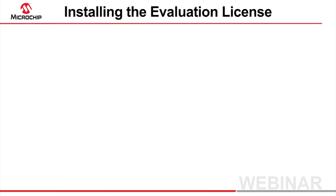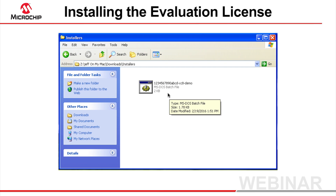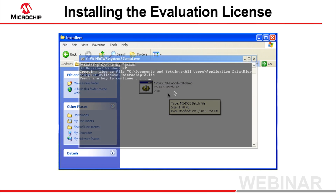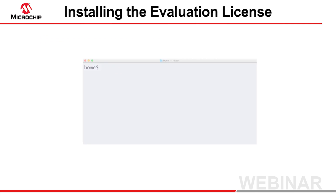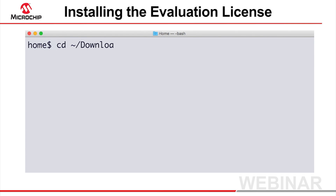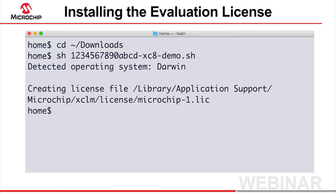Run the download or email attachment to install the license file in the appropriate location. Under Windows, double-click the batch file. For OSX and Linux, it is easiest to run the script from a terminal. Change into the directory where the download is stored and pass the name of this script file to the sh command. Regardless of the platform, the license file will be created and placed into the XCLM license directory.